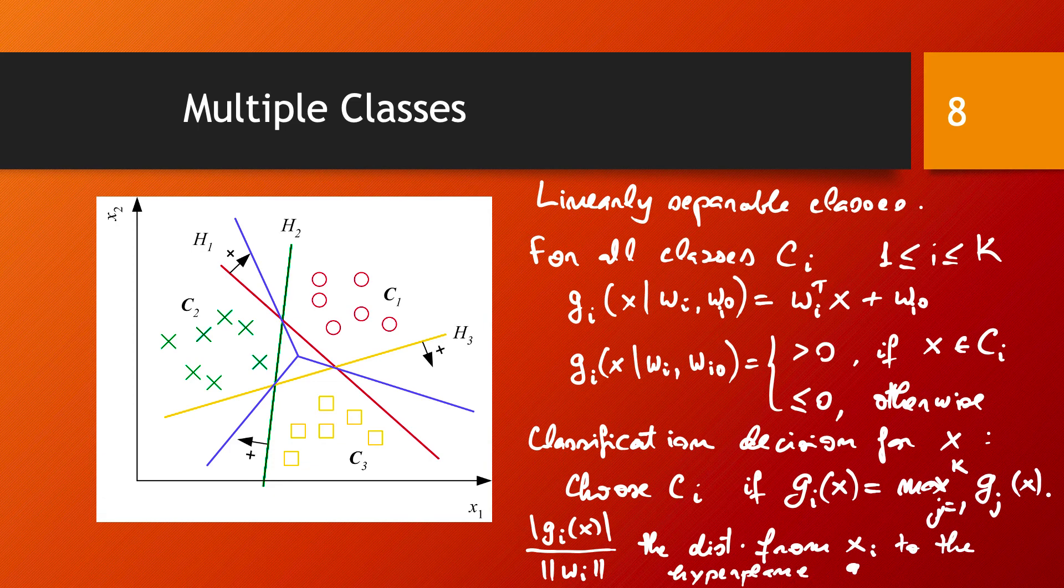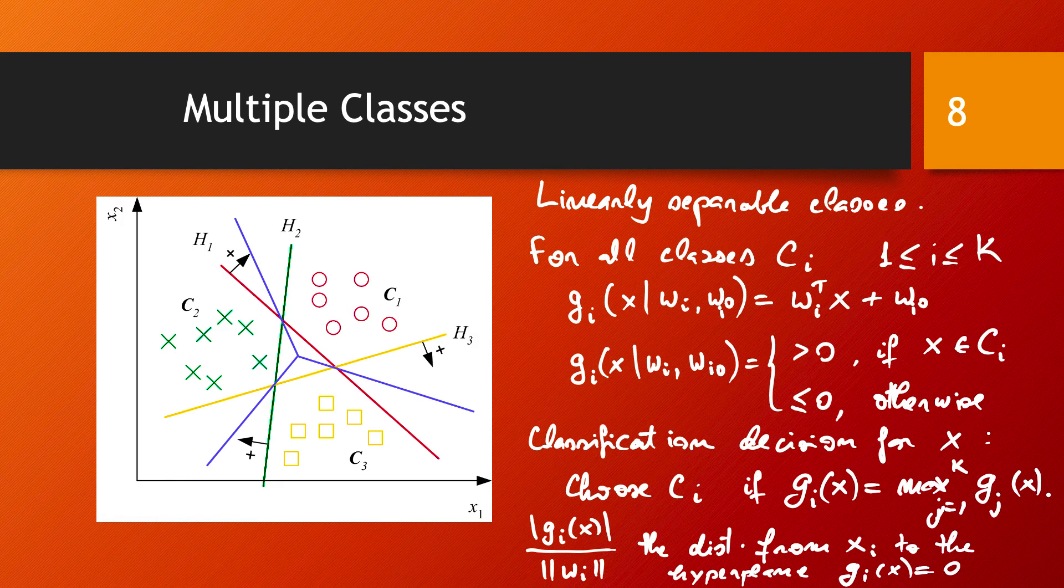To the hyperplane defined by gi of x equals to 0. So with this observation, our classification decision can be translated in this way. We are going to choose the class that corresponds to the hyperplane which is most distant from our data point x.